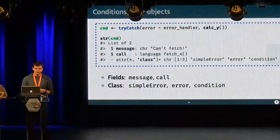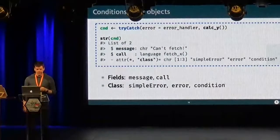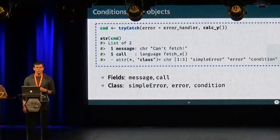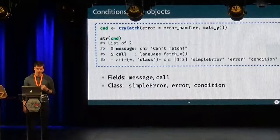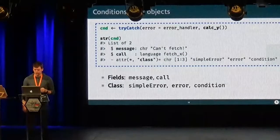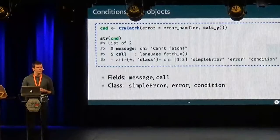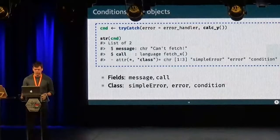And so if we save the condition in an object, we can do whatever we want with it, and we can call str on it. And then we see that it's actually a regular S3 object. It has a class, simple error, error and condition. All conditions inherit from condition. And it has fields, in this case message and call, which is used to display the error message.